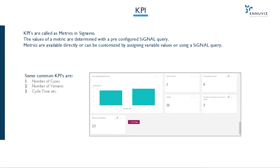KPIs provide targets for teams to shoot for and milestones to gauge progress. Why do we need them? They help in monitoring and tracking the health of the process, increase quality of the decisions, and reduce uncertainty by managing risks.